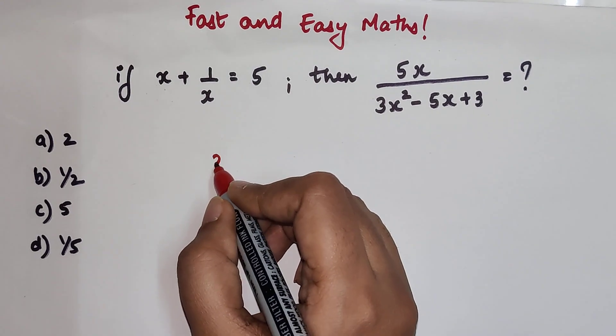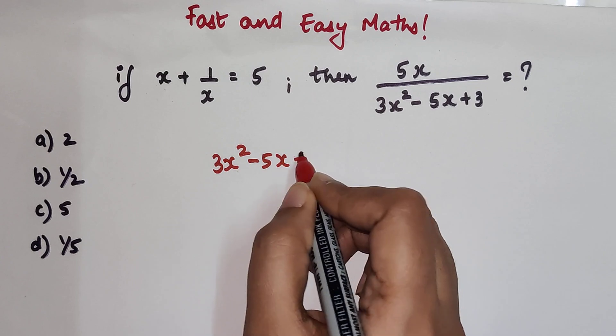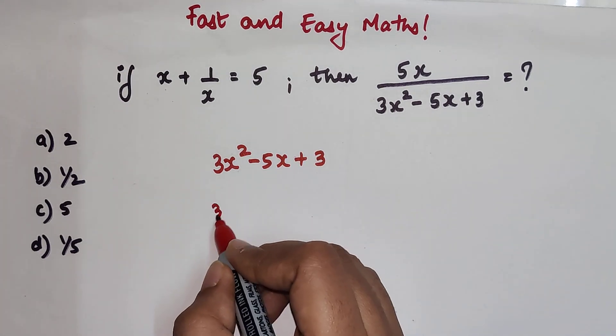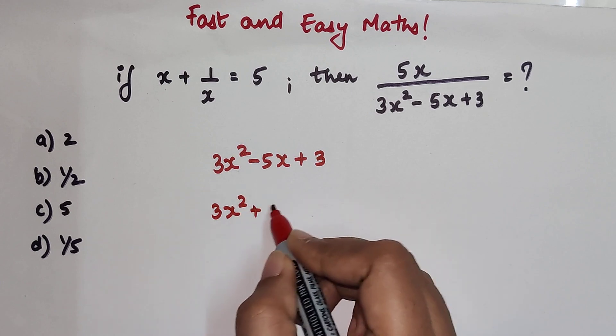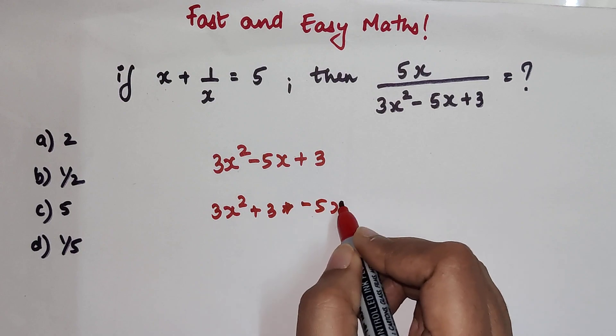So in that case, let's write this: 3x square minus 5x plus 3. Let's write this in such a way that we can get x plus 1 upon x. This is minus 5x.